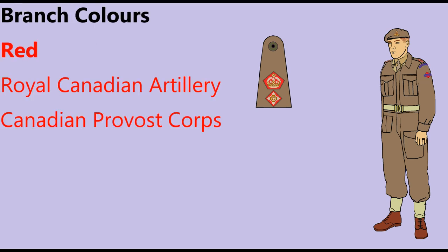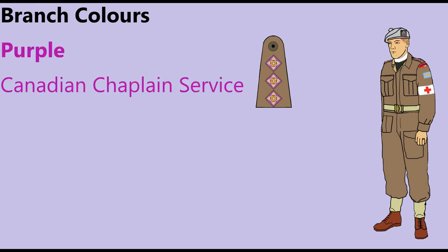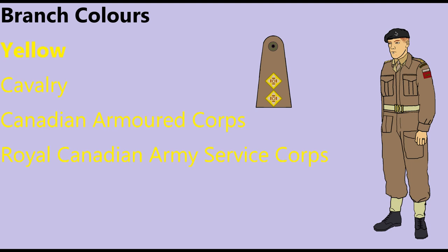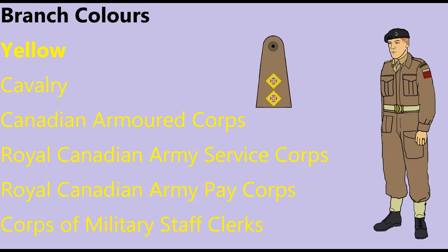Red backings were worn by officers of the Royal Canadian Artillery and Canadian Provo Corps. Purple was worn by officers of the Canadian Chaplain Service. Yellow back badges were worn by officers of the Cavalry, Canadian Armored Corps, Royal Canadian Army Service Corps, Royal Canadian Army Pay Corps, and the Corps of Military Staff Clerks.